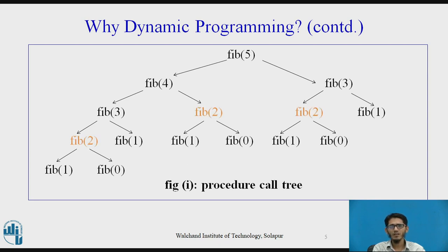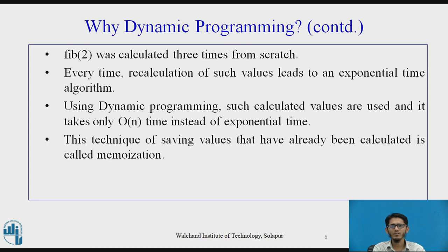As we can see in the highlighted part, the Fibonacci function when called with value 2 is actually calculated 3 times in a single call to fib(5). So fib(2) was computed from scratch 3 times. This recalculation of such values leads to an exponential time algorithm.